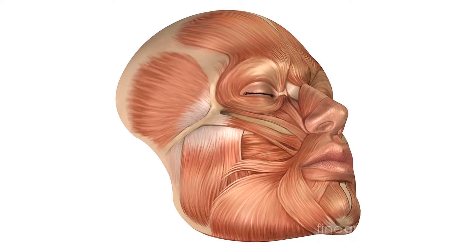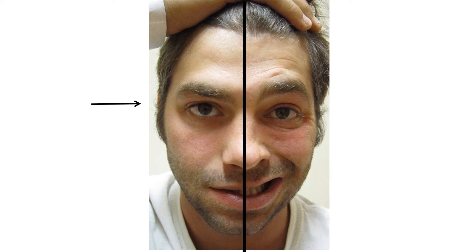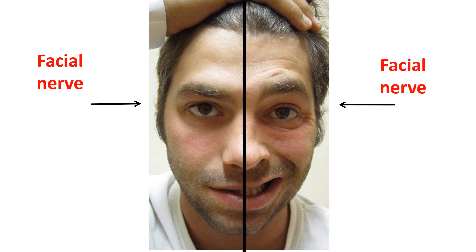One of the common diseases in our society and other societies is what is called facial palsy. If we look at this person and look at both sides, the right and left, we can see that there is a difference in appearance between the right and the left. Both sides are each supplied by the facial cranial nerve, and it is cranial nerve number seven.